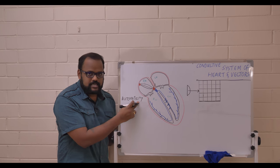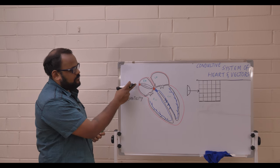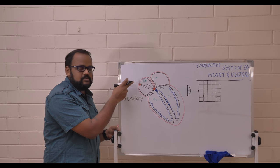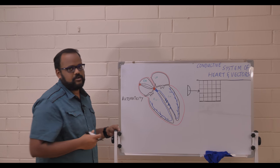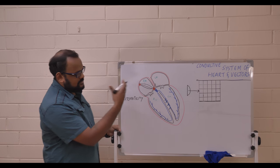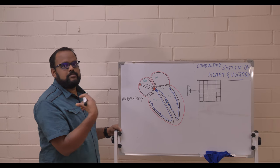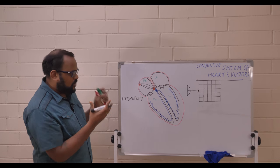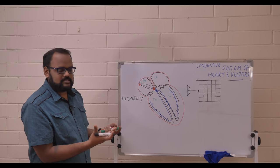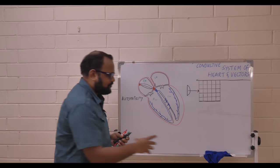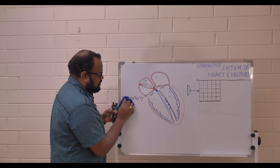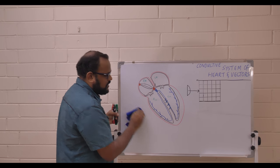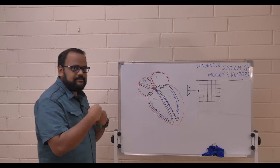The most important automatic cardiac cell is the sinoatrial node. There are other cells which can also produce impulses, but they only come into play when the SA node is sick or not functioning. So the SA node is able to fire impulses.